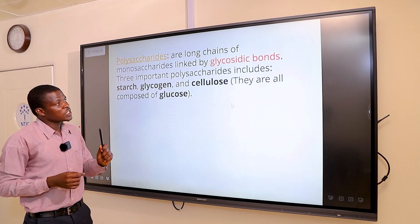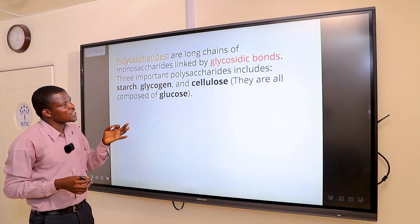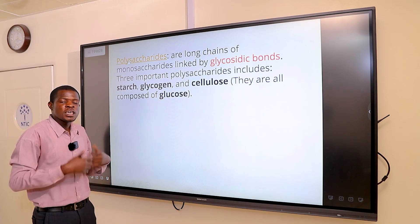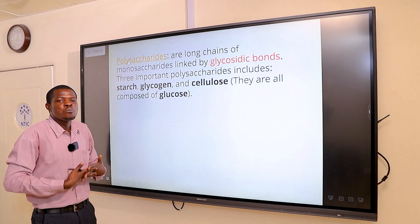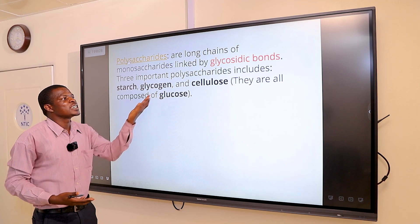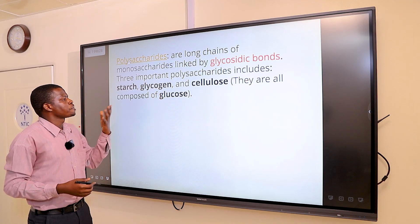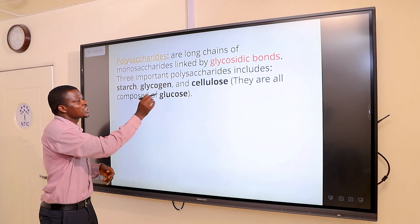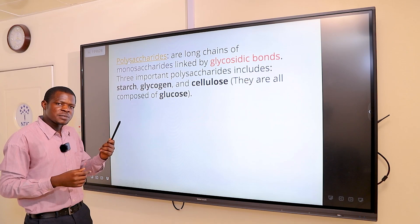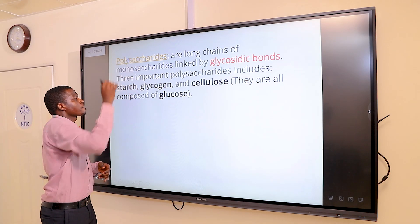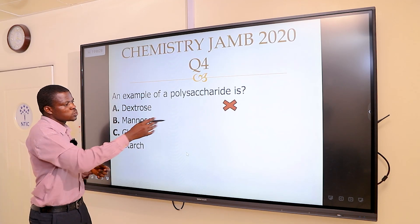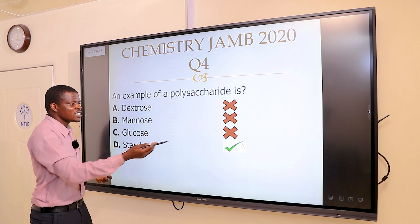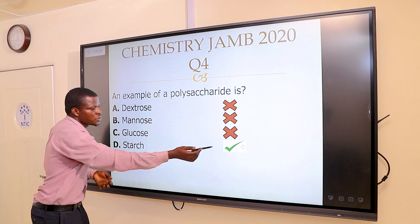Listen carefully. Polysaccharides are long chains of monosaccharides linked by glycosidic bonds. This means that in polysaccharides, we have more than one monosaccharide unit linked by a glycosidic bond. Common examples of polysaccharides would include starch, glycogen, and cellulose. It's not dextrose, not mannose, not glucose. Obviously, the correct answer should be starch.